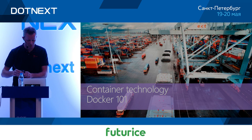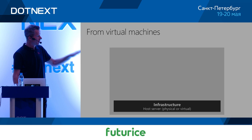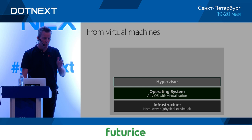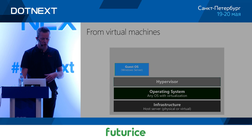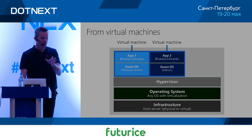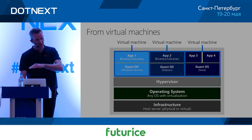So what did we just see — Docker technology. Starting from virtual machines as a reference: you have your infrastructure, your operating system, some form of hypervisor depending on the product, and then a guest OS inside each virtual machine. Your application runs on that guest OS. Because it's all virtualized you can do multiple VMs with different guest OSes — Linux distributions, Windows — and they're isolated from one another.